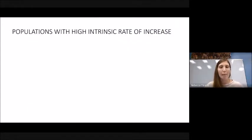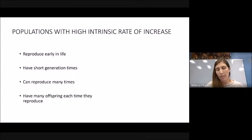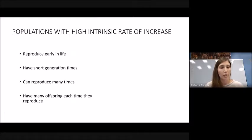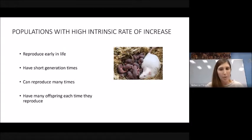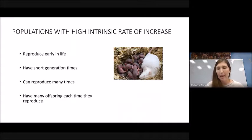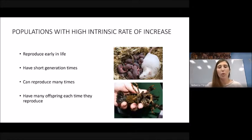Species with a high intrinsic rate of increase typically reproduce very early in life, have short generation times, mature very quickly, and have short lifespans. They are able to reproduce many times and often have many offspring each time. These types of species are found across all kingdoms — small mammals like mice and rats, insects, crustaceans. One female can carry hundreds of eggs, meaning one individual could produce hundreds of offspring at once.